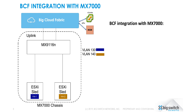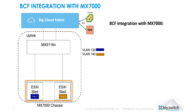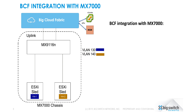Let's take a look at what the BCF integration with MX7000 chassis looks like. Here we have uplinks from the MX9116N IOModule on the MX7000 chassis domain connected to the Bicloud Fabric. We have ESXi installed on a couple of sleds.